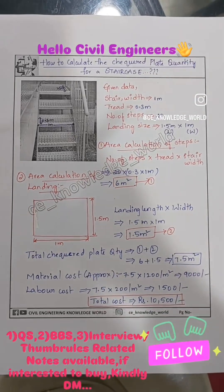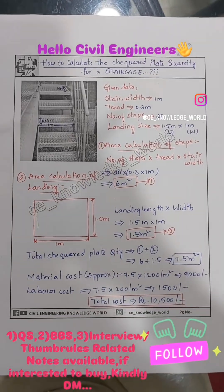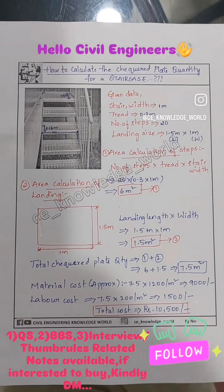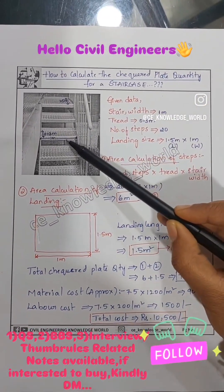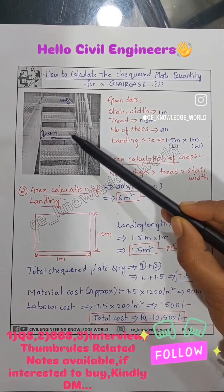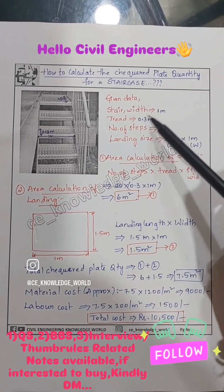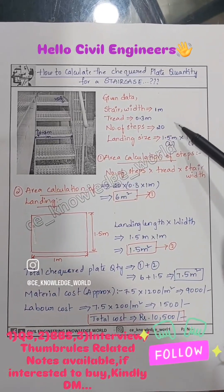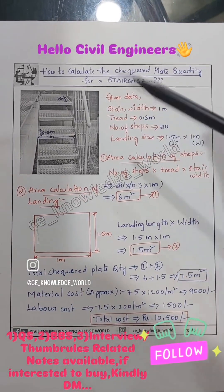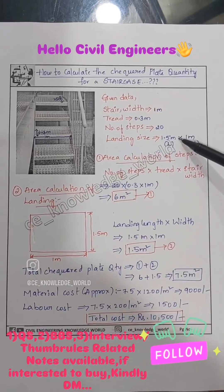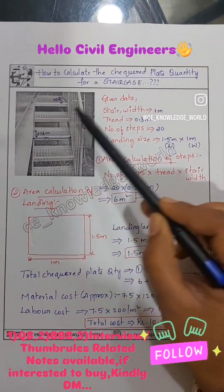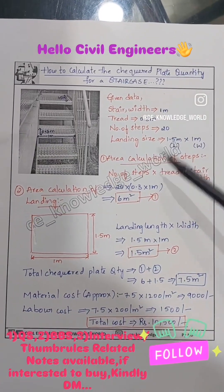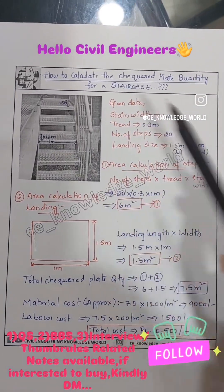Hello everyone. Today in this video we will learn how to calculate the checkered plate quantity required for a staircase. The given data is: width of the stair is 1 meter, tread is 0.3 meter, number of steps is 20, and the landing size is 1.5 meter length and 1 meter width.